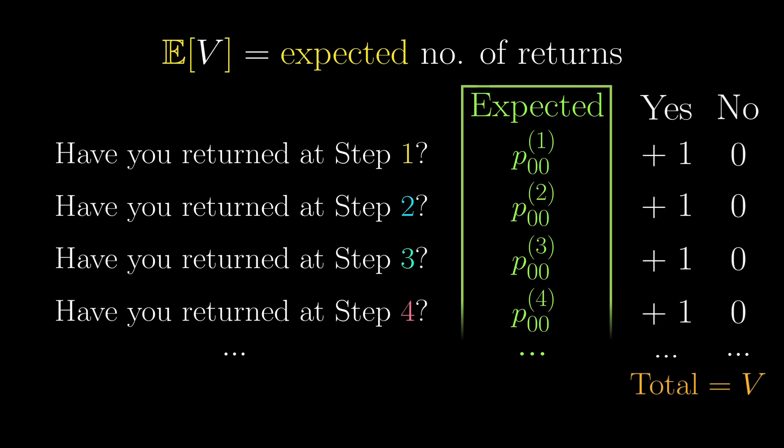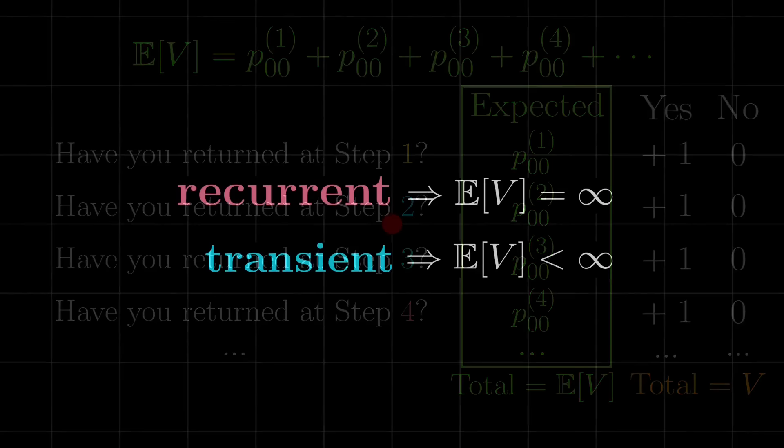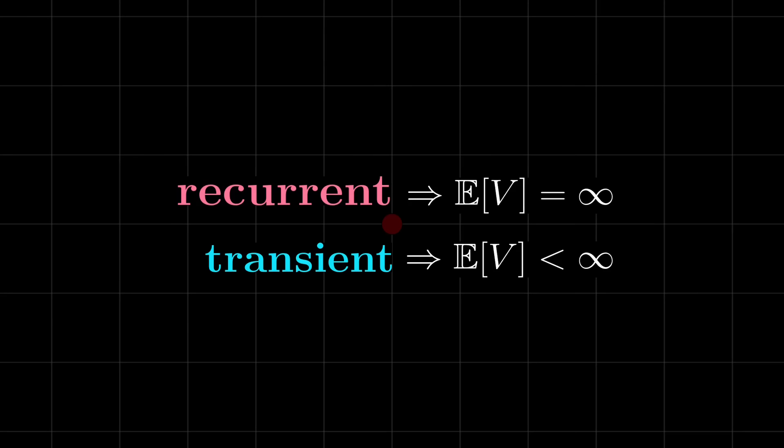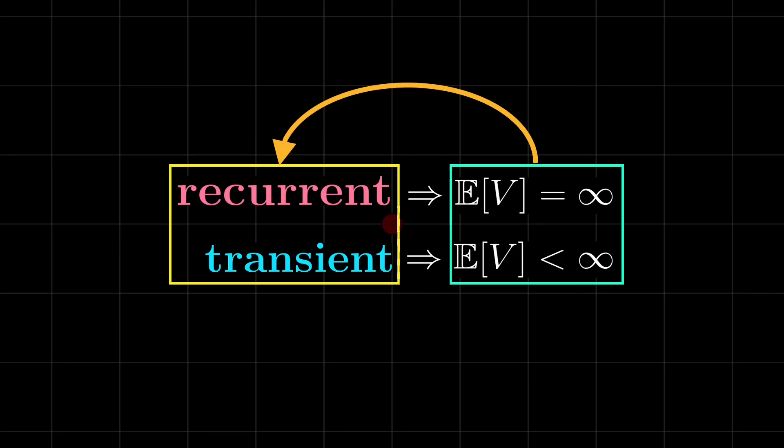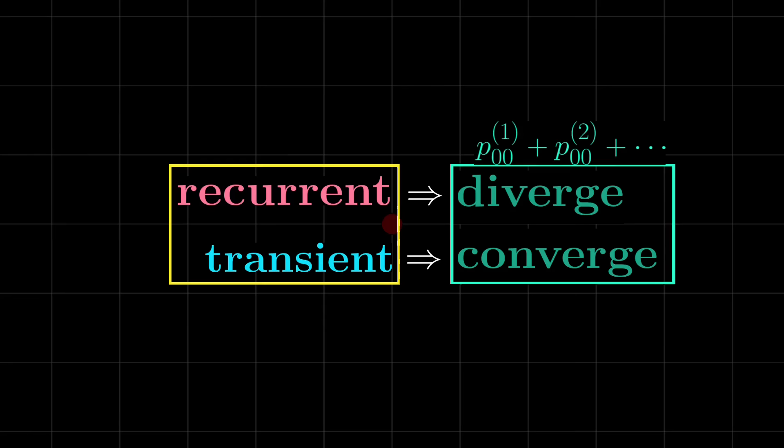These probabilities will be the expected value for each question, and the sum of these probabilities gives us the expected value of V. So we now have a way of explicitly computing the expected value of V. Previously, we deduced that we can simply use the expected value of V to infer whether the state is recurrent, and now we also know how to explicitly compute that expected value. So once we know whether this series converges, then we know whether the state is recurrent or transient. This whole argument actually works for all Markov chains, including the random walk we are considering.